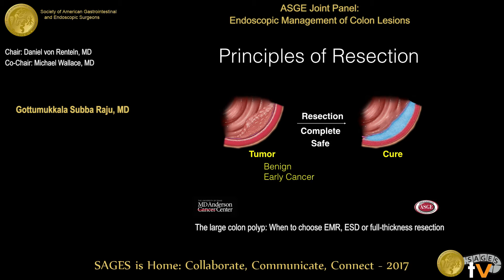The principles and goals of resection: as Heiko talked about, whether it is small or big, we should completely resect and be able to send the patient home safely without a major complication. With endoscopic resection, you can basically take care of benign tumors and very superficial early cancers — SM1 type lesions — and achieve cure in those patients. This can be achieved by either endoscopic mucosal resection or endoscopic submucosal dissection.